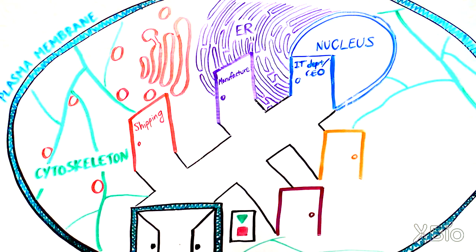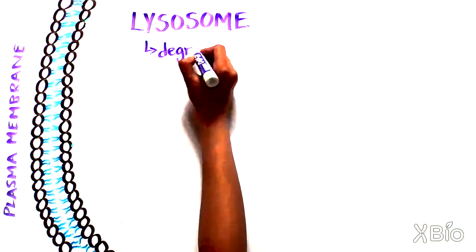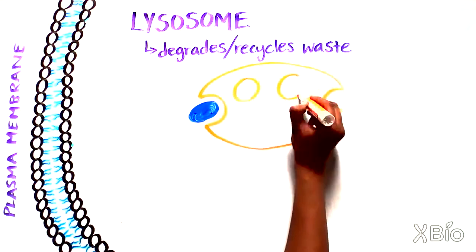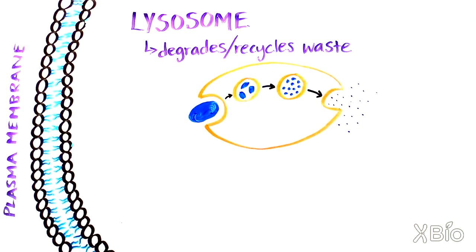In addition to making new products, cells also have to get rid of expired products. The main waste disposal department is an organelle called the lysosome, which can degrade or recycle waste.